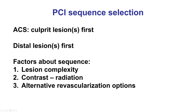Factors influencing the choice of sequence are lesion complexity, contrast and radiation use, and the availability of other revascularization options. For example, patients who have both a non-CTO and a CTO lesion will most often have their non-CTO lesion treated first, and then return for CTO recanalization, which is usually more complex and requires more careful planning.